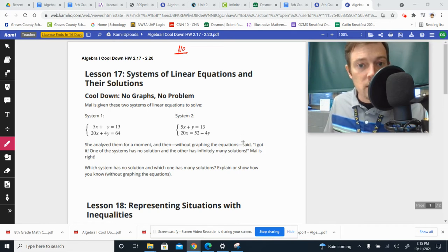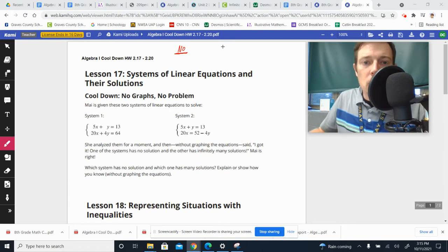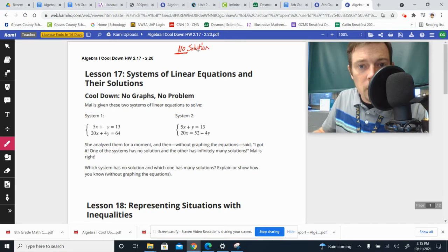Which one's the no solution, which one's the infinitely many? So a couple of hints here. Whenever there's no solution, you're going to work it out, both of the variables are going to disappear, and you're going to end up with a statement that's not true, or not equal. You're going to end up with 4 equals 0 or something like that.